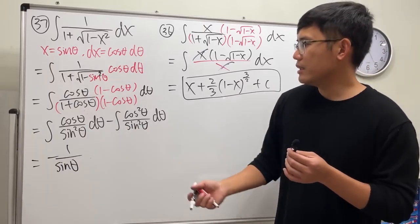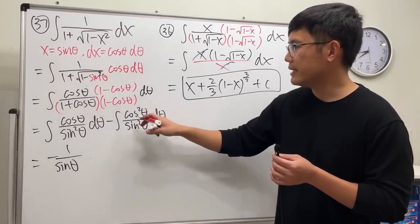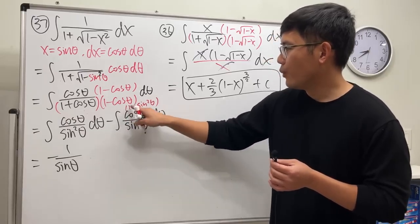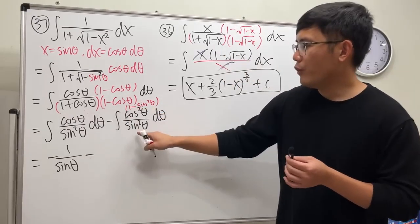For this right here, how to do it? You can do a quick identity. This is one minus sine square theta. One minus... one over...